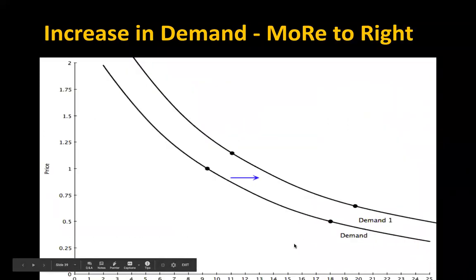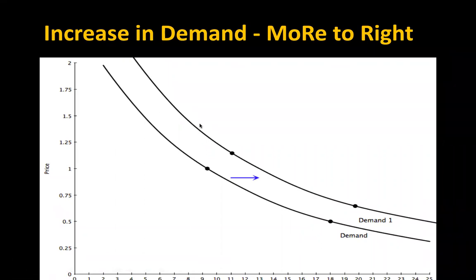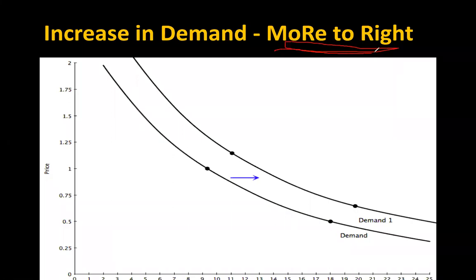Two quick things to remember. Once you realize that a change in demand creates a whole new curve, you need to know which way it moves — right or left. The quick and easy way to remember: more is to the right. Whether you're talking about demand or supply, more is to the right. You can even take this back to the production possibilities curve — when the PPC moved out to the right, that meant more production. It's the same with supply and demand: when the demand curve moves to the right, that shows an increase in demand at every price.